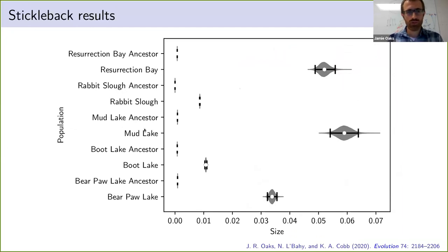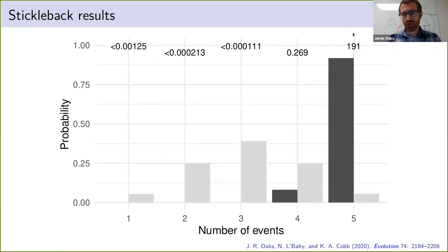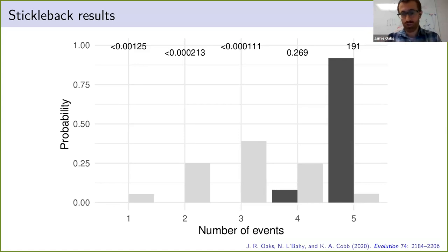We applied this to genomic data from five Alaskan populations of sticklebacks. The results confirm that there was a large expansion in effective population size for all five populations, corroborating what the ABC methods found. However, we found really strong support that all of them expanded at different times — they didn't all expand at the same time. Once again we seem to be running into this problem where approximate Bayesian computation methods are tending to lump things together when perhaps they shouldn't be.